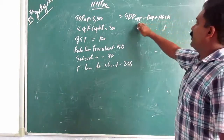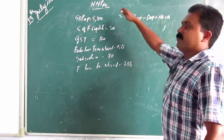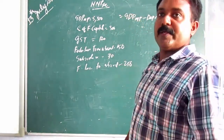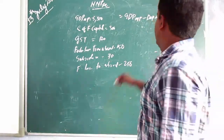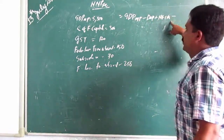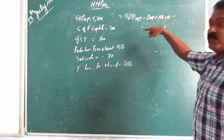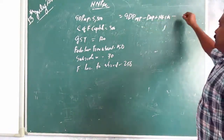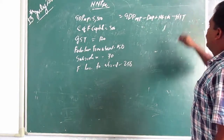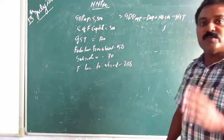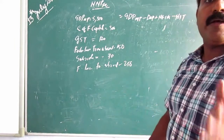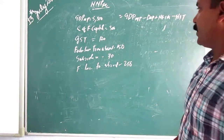Next, market price to factor cost: from market price you need to reduce NIT — net indirect tax. Reduce net indirect tax and it will become factor cost.